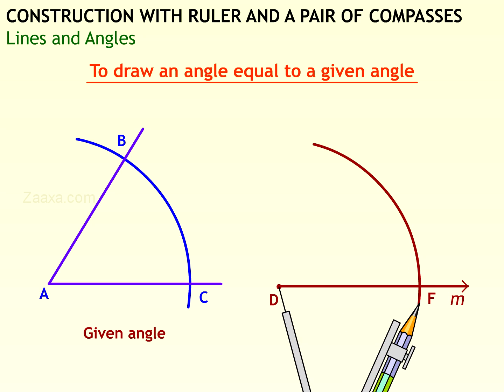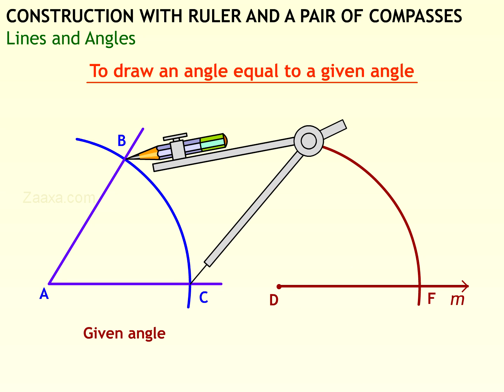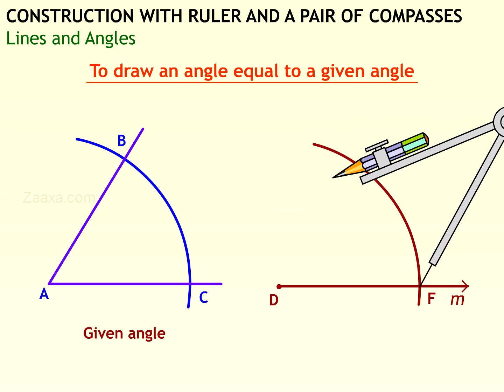with D as center, draw a similar arc cutting ray m at point F as shown. Measure the distance between B and C of the given angle using the compass. Without changing the width of the compass, and with